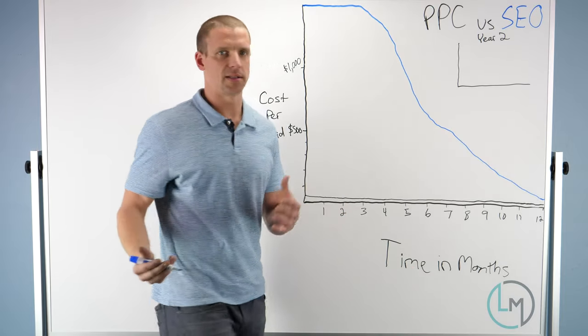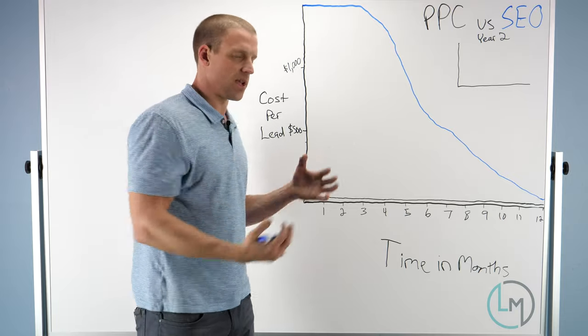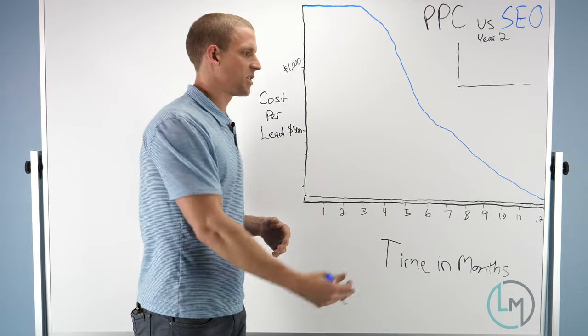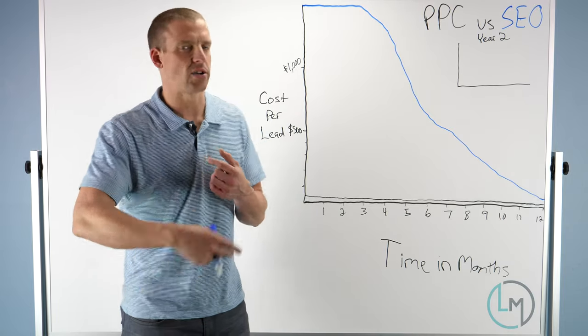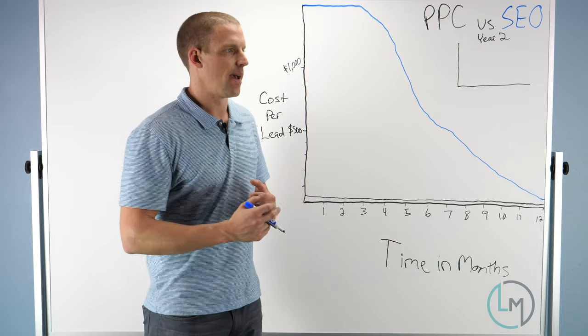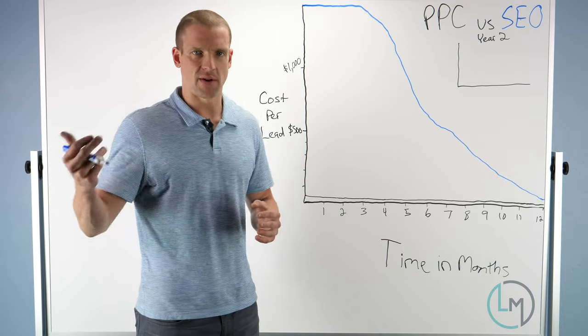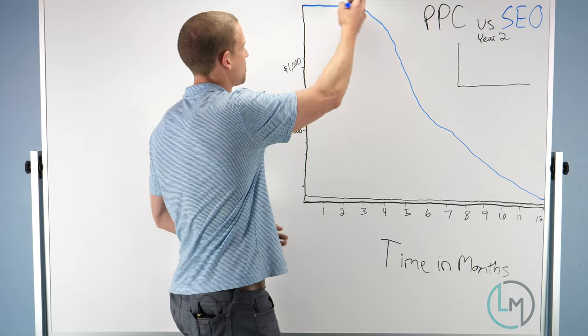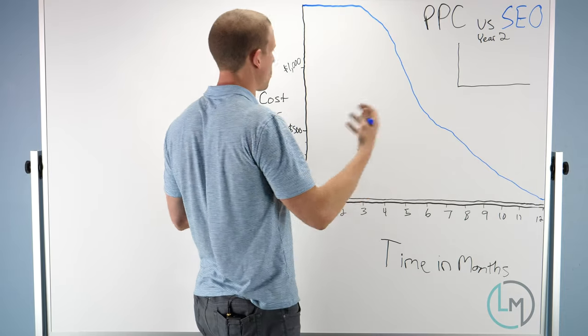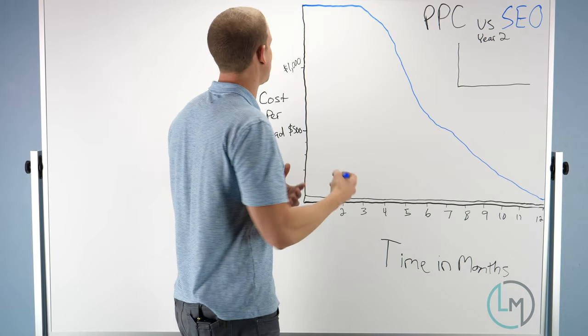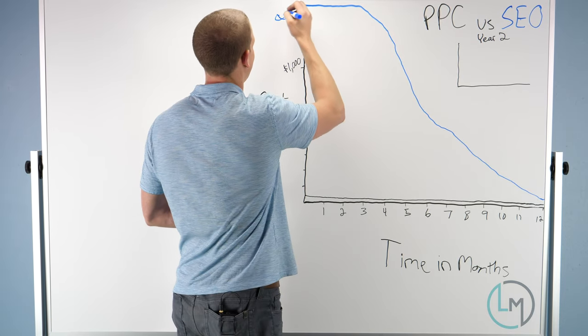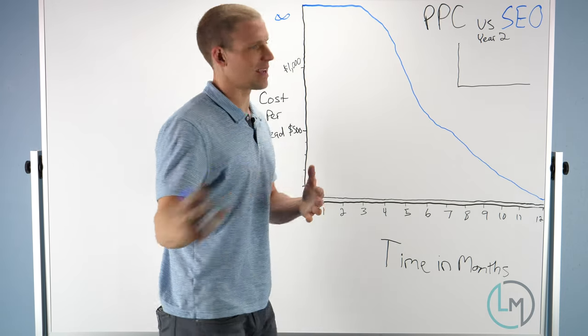In those first three months, you might not even get any leads because they're doing the on-site optimization, they're building links to your site, your site hasn't gotten any traction, it's not on the first page, and there's not many people that go to the third page. Your cost per lead is going to be really high—it's actually more than $1,500. It's pretty much infinity because you're not getting any leads.